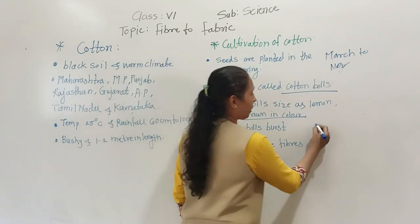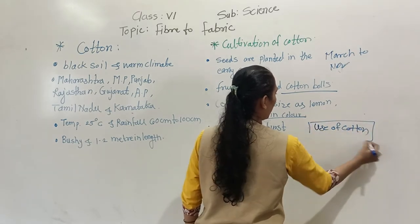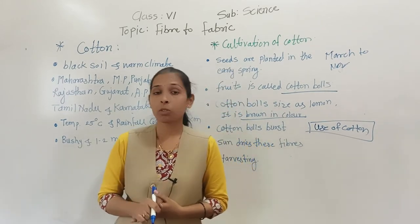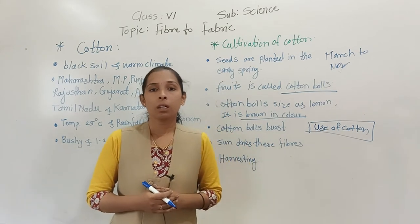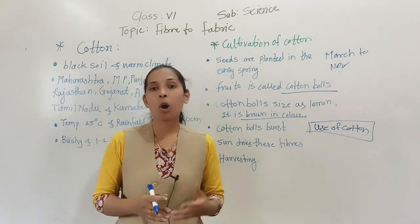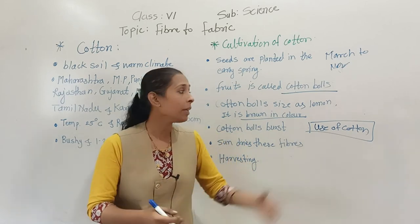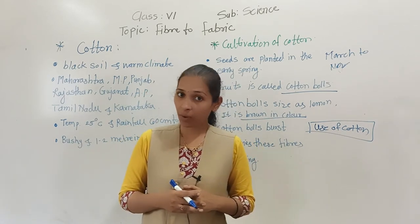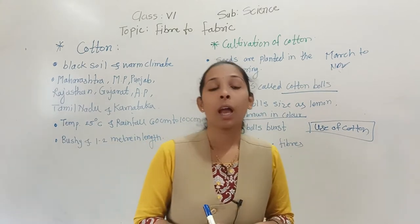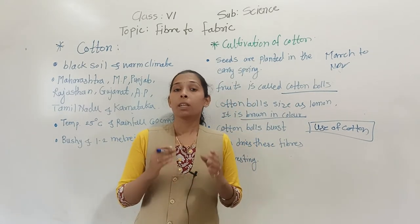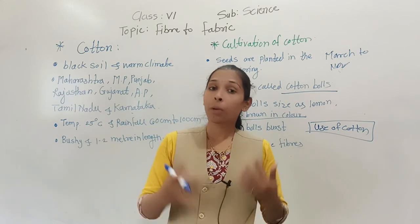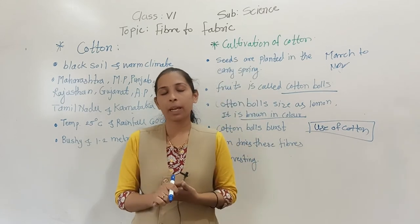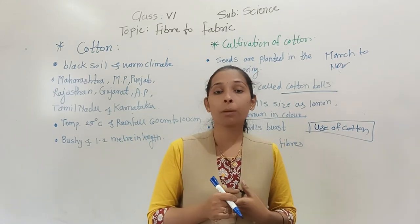Now we will see the uses of cotton. Cotton is mostly used for the manufacturing of clothes and linen. For example, socks, t-shirts, bed sheets, pillow covers, and towels are all made of cotton. Cotton is the most durable fabric to wear because it absorbs a large amount of water and sweat, allows air to pass through it, and helps keep our body cool at normal body temperature.